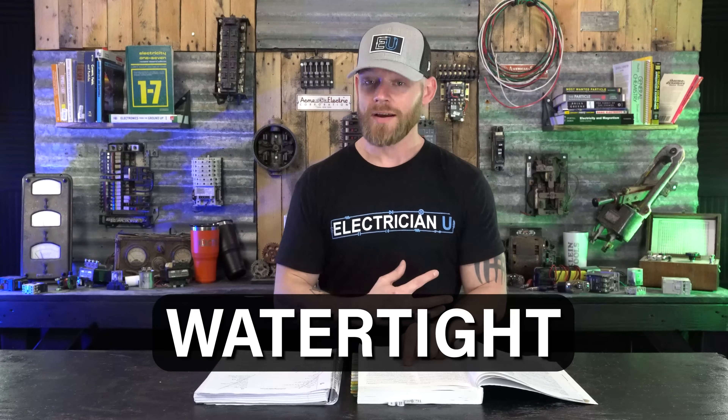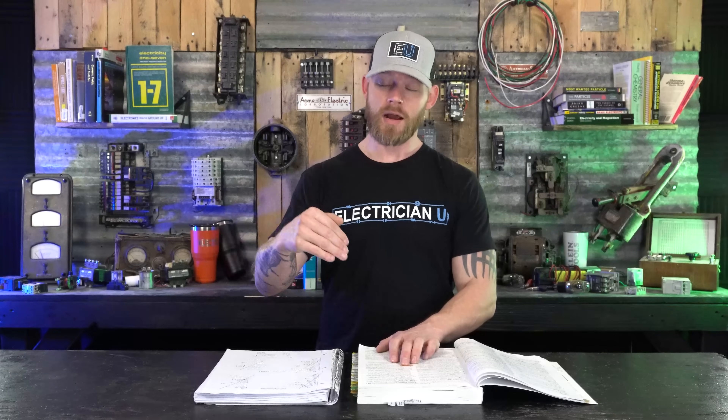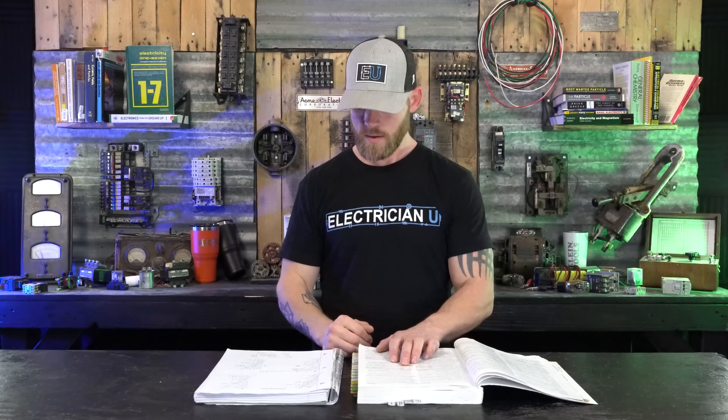Next we have watertight. Watertight is constructed so that moisture will not enter the enclosure under specified test conditions. Rain is one thing; water is another — for watertight, moisture in general is not going to penetrate. When you're talking about rainproof and raintight, it's talking specifically about the conditions of rain.